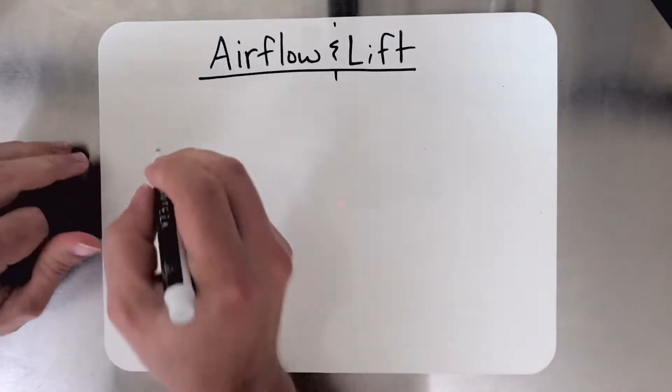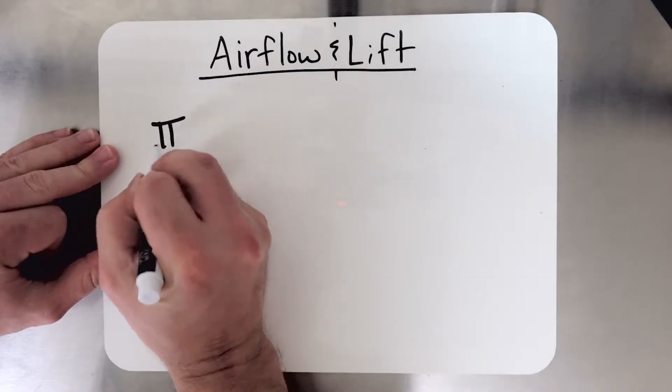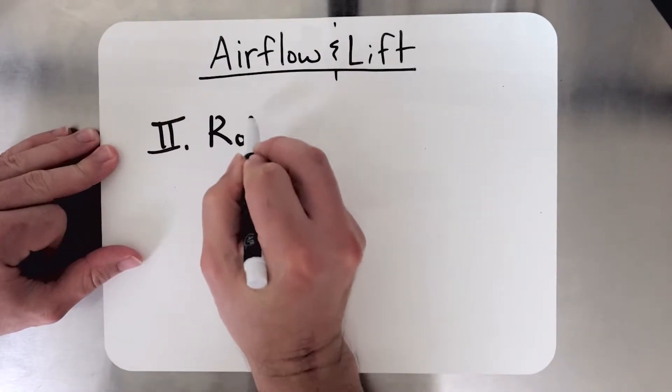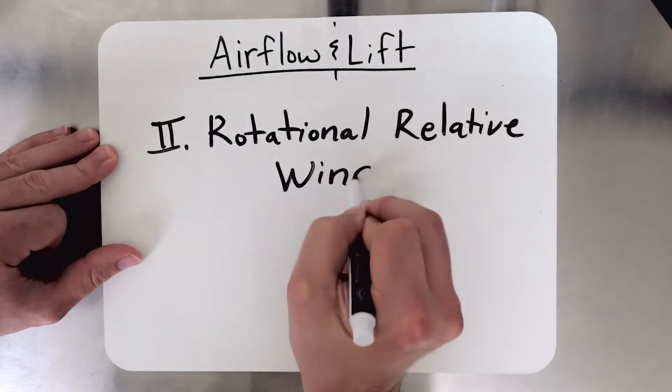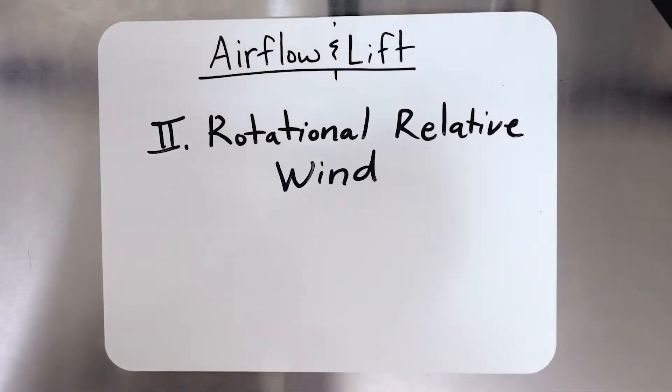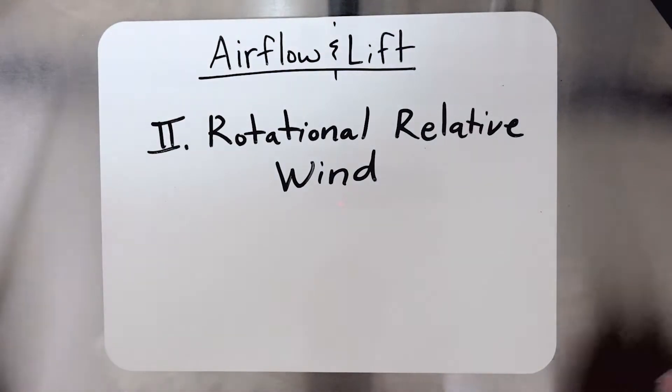The second concept we're going to talk about is rotational relative wind. Now rotational relative wind is basically relative wind, except with an understanding of the fact that in a helicopter, we don't have a single airfoil moving in a straight line through the air, we have a rotating rotor. And that comes with some differences.